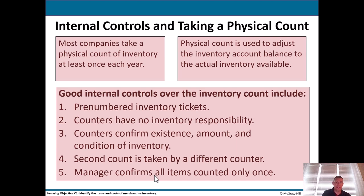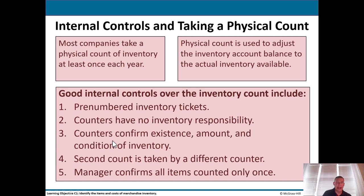Internal controls and taking a physical count — most companies take a physical count of inventory at least once each year, and this count is used to adjust the inventory account balance to the actual inventory available. There are usually some discrepancies. Good internal controls include: pre-numbered inventory tickets; counters who have no inventory responsibility — think separation of duties; counters who confirm the existence, amounts, and condition of inventory; a second count taken by a different counter who doesn't compare notes; and a manager who confirms all items were counted only once.